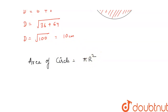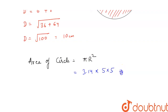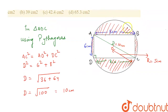We will take the value of π as 3.14 and the radius we found is 5. So 3.14 × 5 × 5 = 78.5 cm². So this is the area of the entire circle.